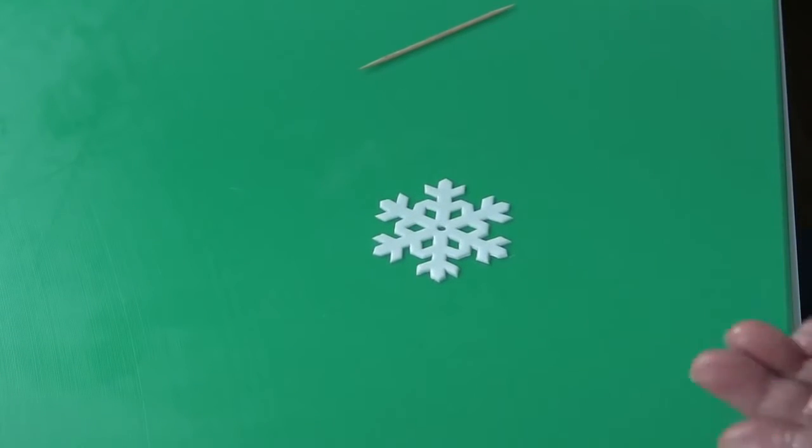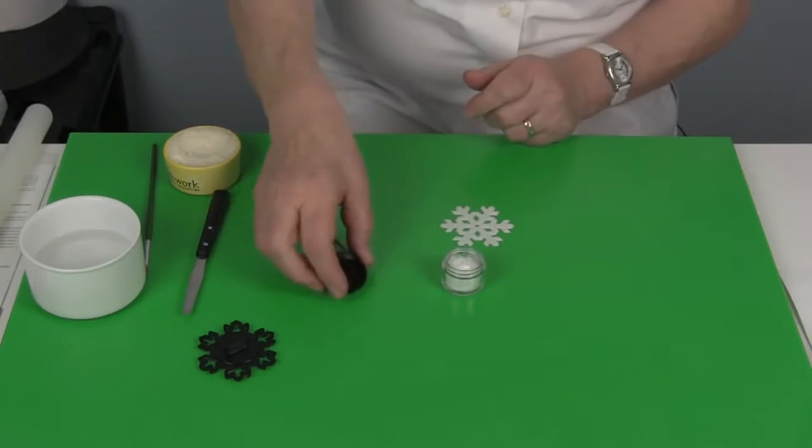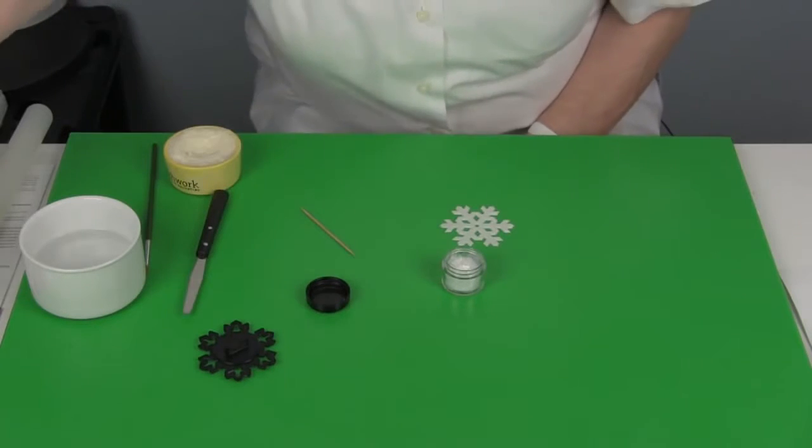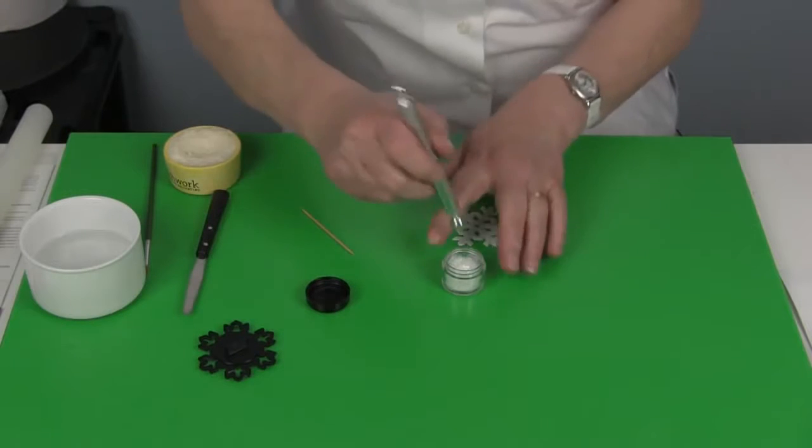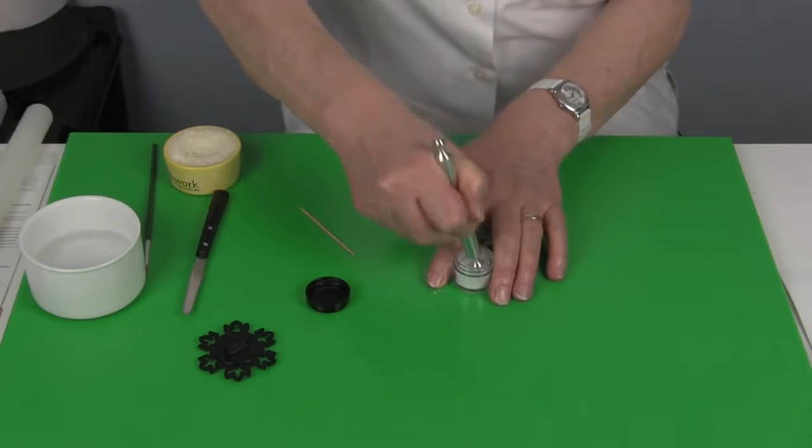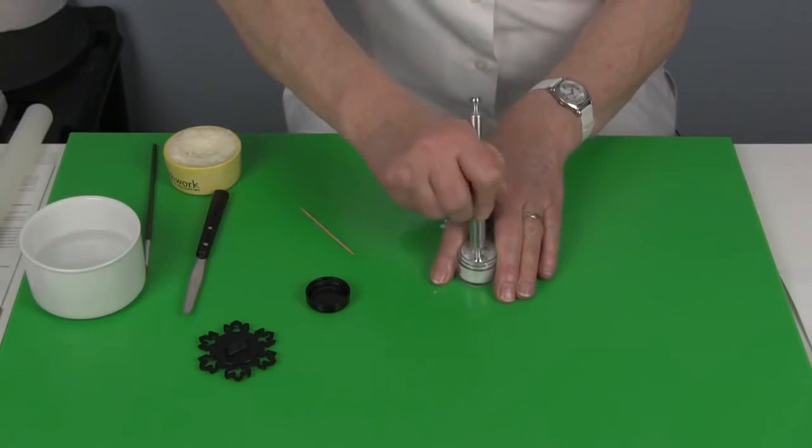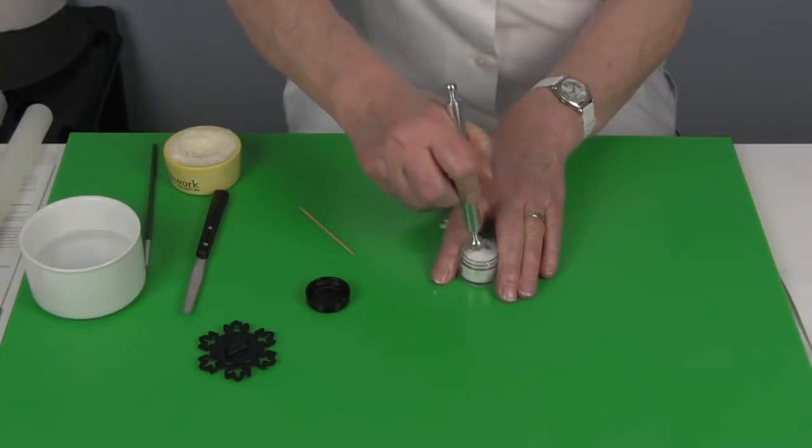And then for the magic sparkles, they do come in quite large flakes. So if you want to have a finer look to your snowflakes, then just grind them down until you're satisfied that they're as fine as you wish them to be.